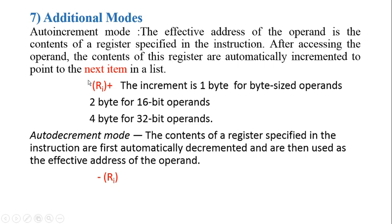Suppose our operand is of length 16 bits or 2 bytes. In such a situation, after finding the effective address from register RI, its content is automatically incremented by 2.